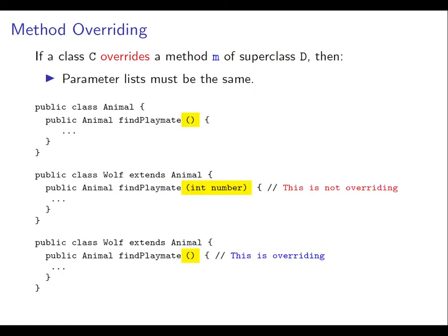Here are some conditions that must be obeyed. The parameter lists must be the same. One thing that's not okay, it's not overriding, is for the Wolf class to add an argument to the findPlaymate method and think that in doing so it is overriding the findPlaymate method from Animal. You have to have the same parameter lists.